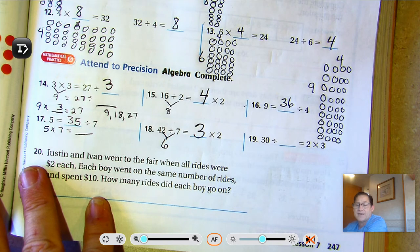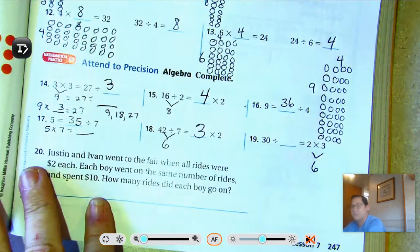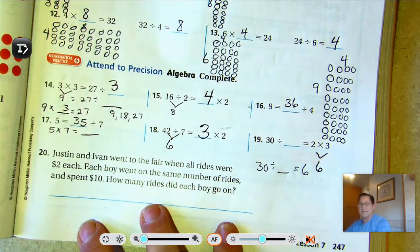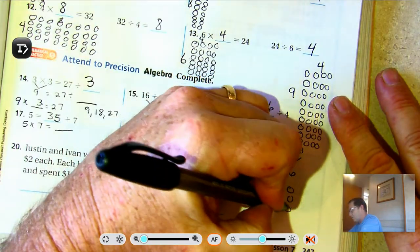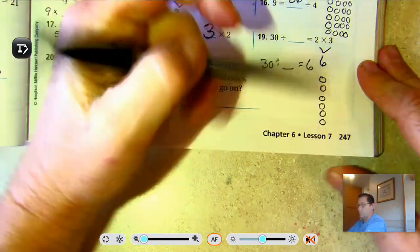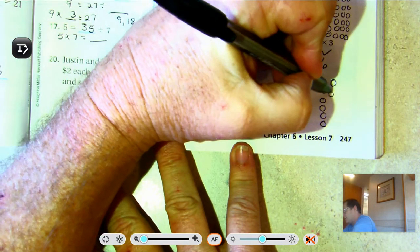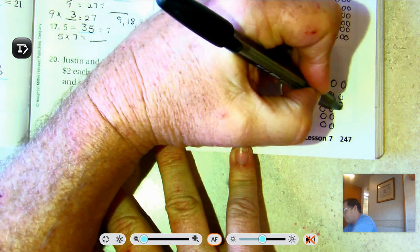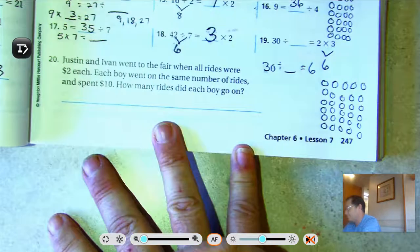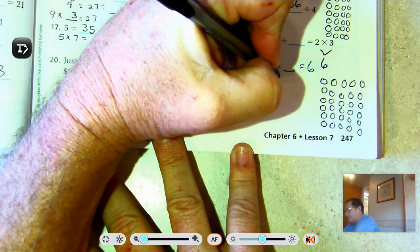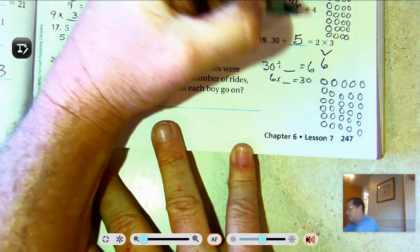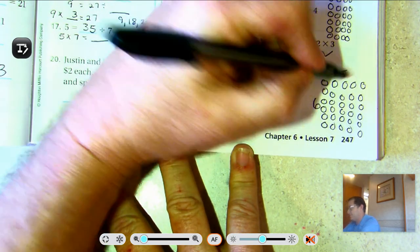19. 30 divided by something equals 3 times 2. 3 times 2 is 6. So 30 divided by something equals 6. If we had 6 rows, we have to count rows of 6 until we get to 30. So 6, 12, 18, 24, 30. So 30 divided by 6 is the same as saying 6 times what is 30? Five. 30 divided by 5 is 6.